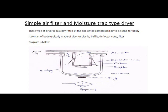Let us first discuss this simple air filter and moisture trap type dryer. This kind of dryer is basically fitted at the end of the compressed air to be sent for the utility. Mostly this kind of dryer are very commonly found in compressors. The parts of this dryer consist of a body that is typically made of glass or plastic.